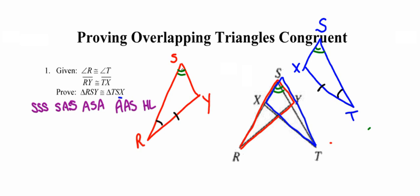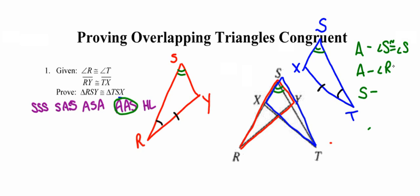So looking at this picture, I can prove these triangles congruent by angle-angle-side. I'm going to put my outline up here so I know exactly which pieces to discuss in my proof. I want to talk about angle S being congruent to itself using the reflexive property with angles — which is a new idea. We've used reflexive property before to identify common sides, but now we're using it to identify a pair of common angles. The second pair is angles R and T, and the pair of sides is RY and TX.